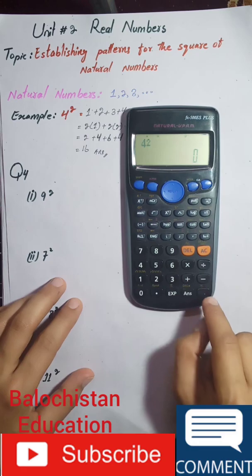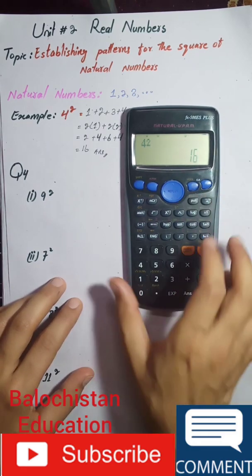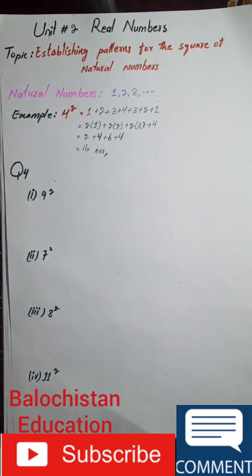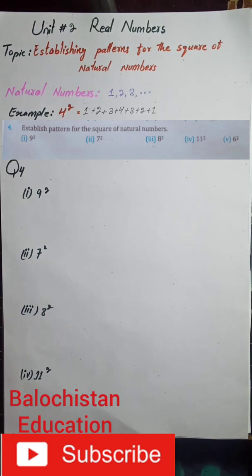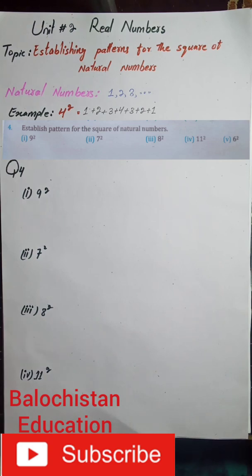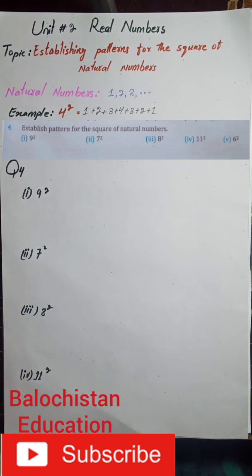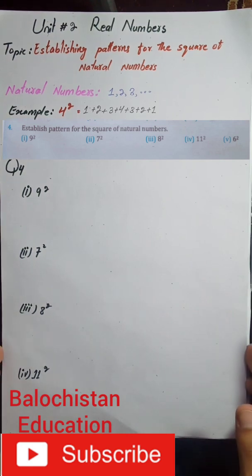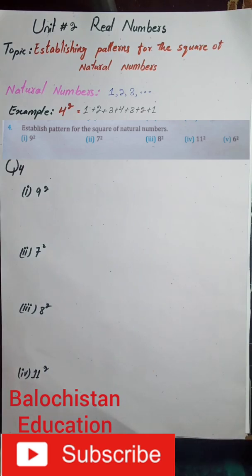I will show you this using a calculator — 4 squared equals 16, so our pattern is correct. Now we have Question 4 in Exercise 2.1, and we have some options for which we have to find a pattern for the square of these natural numbers. I will solve 4 of these for you, and you have to find the pattern for the last number and practice it yourself.